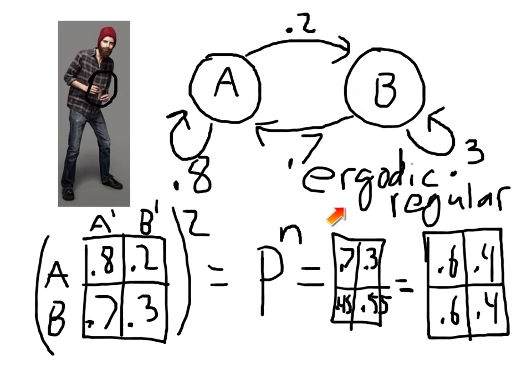To be regular, it has to be the case that for some n, there exists a transition matrices that has all non-zeros. That is, all the states can connect to, all the states connect to each other. There has to be at least one n, and that will define a Markov chain that is regular and thus also ergodic.